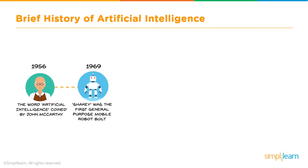Let's jump forward to 1969 — Shaky. Shaky was the first general purpose mobile robot built. Although by today's standards he was very simple, he did mark a milestone in that we were now processing data differently. He was able to do things with a purpose versus just a list of instructions — things like turning on and off lights and pushing boxes around the room.